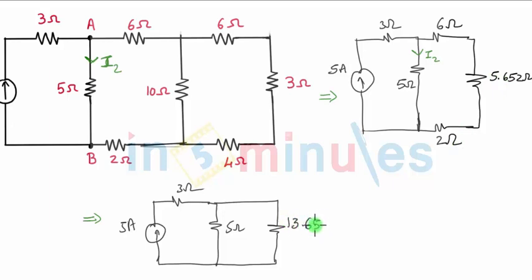You can see that 5 amperes is the source current to these two parallel branches. The current source and 3 ohm resistance in series with current source will become redundant in terms of calculating the currents I2 and current through this particular branch, but right now we are only interested in I2.